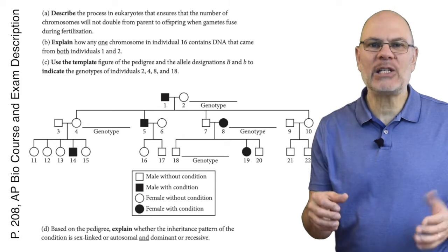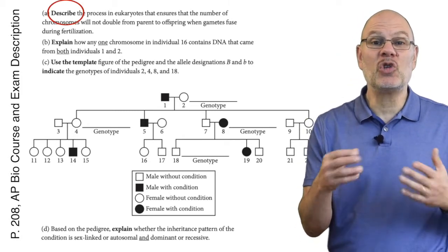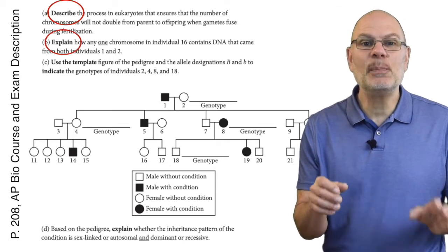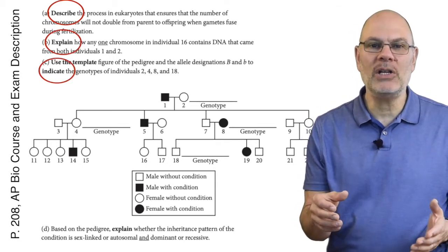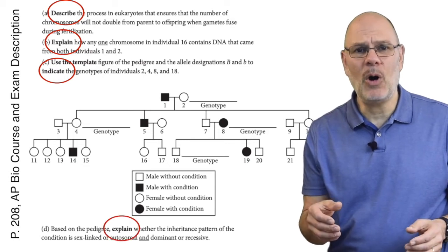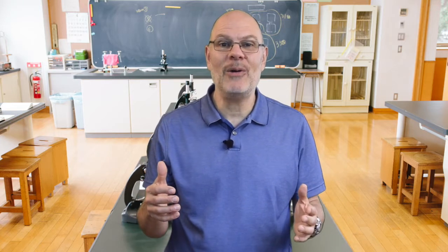In this question, you have to describe in Part A, then explain in Part B, then indicate using a template in Part C, and then explain in Part D. For the past three years, I've been part of a huge team of teachers that scores the FRQs on the AP Bio exams. One of the biggest ways that students lose points is by not responding to all parts of the question.